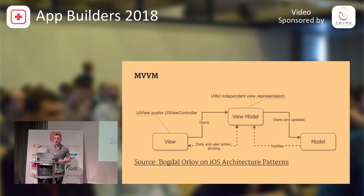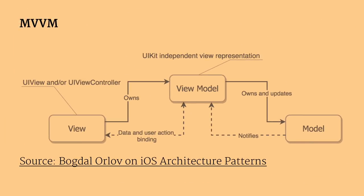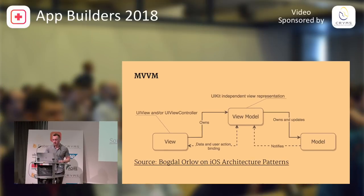MVVM is only slightly more complicated than MVC. Crucially, you have to treat both UIView and UIViewController as part of the view layer. There's no tight coupling between the view and the model. This usually requires some kind of binding — but it doesn't require a full FRP library like ReactiveCocoa or RxSwift. You can write a simple Observable to forward data to views in about 100 lines of implementation.